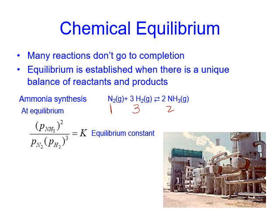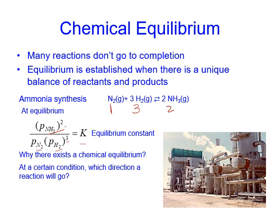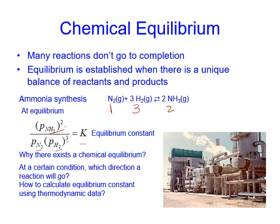So when the reaction reaches an equilibrium, the partial pressure of the product to the second power divided by the reactants — nitrogen and hydrogen to the third power — is a constant called the equilibrium constant. In this chapter, we are going to see why there exists a chemical equilibrium, and at certain conditions, which direction the reaction will go, and how to calculate the equilibrium constant using thermodynamic data, and what factors change the equilibrium constant.